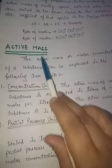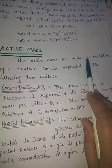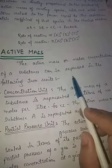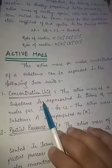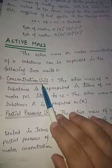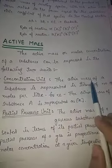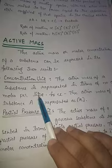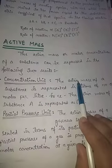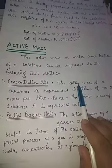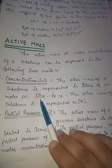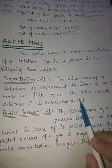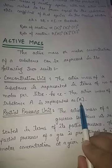After that, a term called active mass was introduced. Active mass, or molar concentration, is the molarity. To express molar concentration, the term is enclosed in a square bracket. The active mass of a substance is represented in terms of number of moles per liter — for example, the active mass of substance A is written as [A].